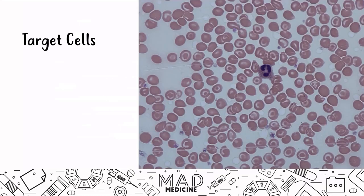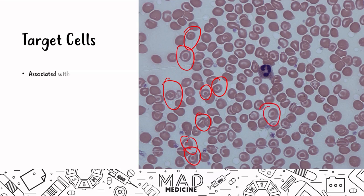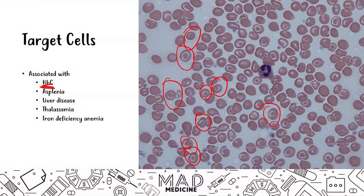This is what a target cell looks like — red blood cells with target lesions. Target cells are associated with both hemoglobinopathies: hemoglobin C disease and sickle cell anemia, as well as asplenia, liver disease, thalassemias, and iron deficiency anemia. Both hemoglobin C disease and sickle cell disease can present with target cells.